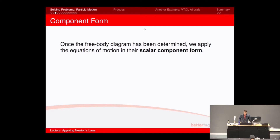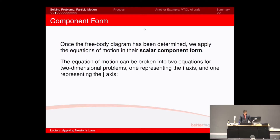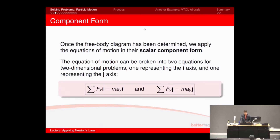Once you've drawn the free body diagram, we need to apply the equations of motion to get all the scalar component forms of these vectors. The equation of motion can be broken down into two equations: one that is just all the x-direction components of the vectors, and the other equation is all the y-components. So the sum of all forces equals ma can be broken down into the x one, which is the i's.